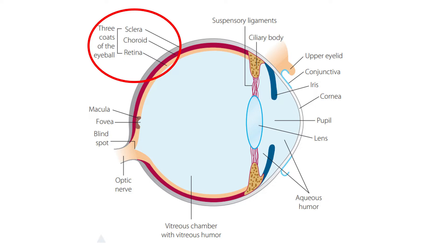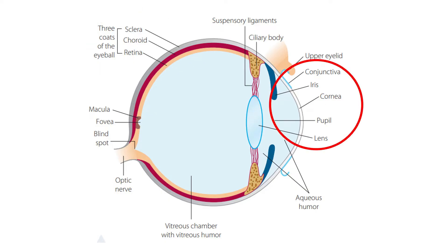The retina is the inner layer of the eye. It contains photoreceptors called rods and cones situated at the back of the eye. The rod and cone cells are stimulated by light focused on the retinal surface and transform this light energy into electrical nerve impulses sent via the optic nerve to the brain. At the front portion of the eye is the conjunctiva, which protects and lubricates the eye through the production of tears and mucus.